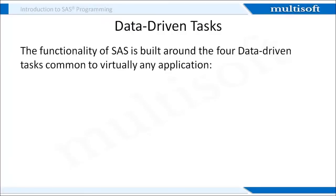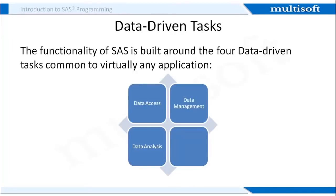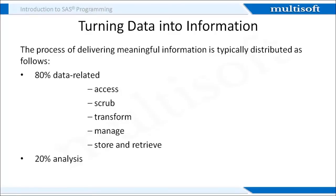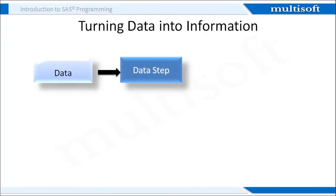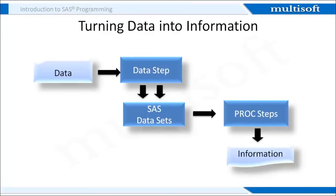The functionality of SaaS is built around four data-driven tasks common to virtually any application: data access, data management, data analysis, and data presentation. When delivering meaningful information, 80% of the time is data-related — including access, scrub, transform, manage, store, and retrieve — while 20% is spent in analysis. The SaaS language uses a data step to create SaaS datasets from raw data files, with the extension .sas7bdat. The PROC step then converts the SaaS dataset into valuable information such as reports. The following slide explains the design of the SaaS system.